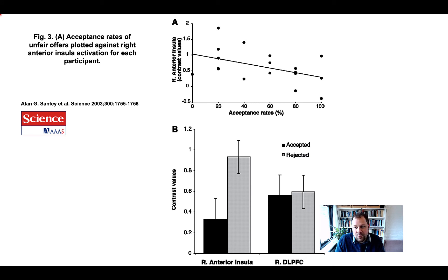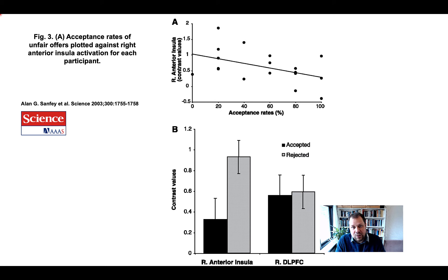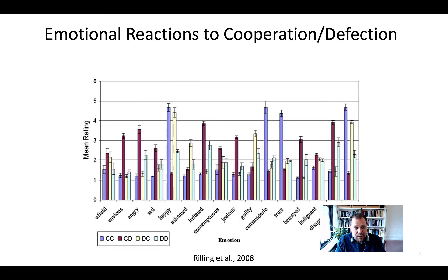The insula seems to be encoding the emotional aspect of the unfair offer. A reason for this conclusion is that the insula has been implicated in processes related to negative affect — it's part of what you might call the brain's withdrawal system. You can find the insula commonly involved in negative affective emotions across a number of meta-analyses. However, this is still just a reverse inference. What we'd need is to assess emotional responses to unfair offers on each trial and correlate them with insula activation.